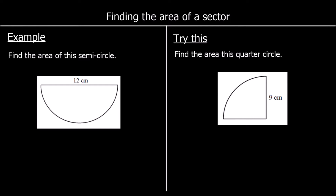To find the area of a circle, we use the formula pi times the radius squared. The area of a circle is equal to pi times the radius squared.